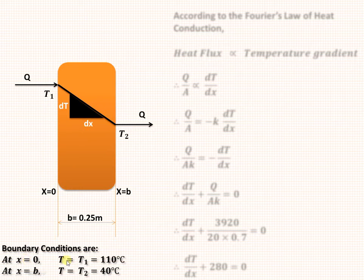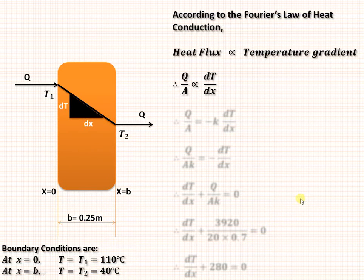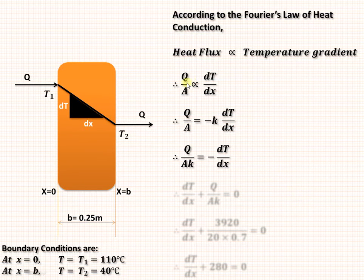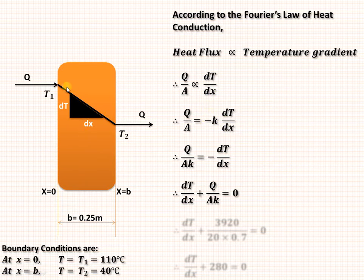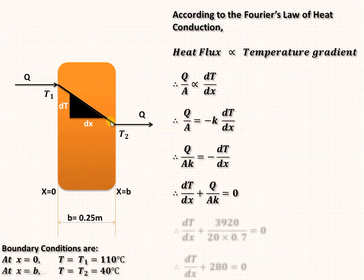At x equal to 0, temperature is 110; at x equal to B, that is 0.25 meters, temperature is 40 degrees centigrade. These are the boundary conditions. According to Fourier's law of heat conduction, heat flux — that is the heat transfer rate per unit area — is directly proportional to the temperature gradient, that is how temperature changes with respect to distance. As it is a negative slope, the temperature goes on decreasing in the direction of heat flow, and this temperature distribution we have to plot by solving the differential equation.